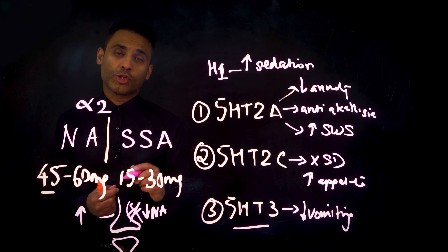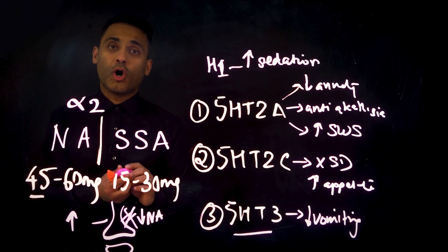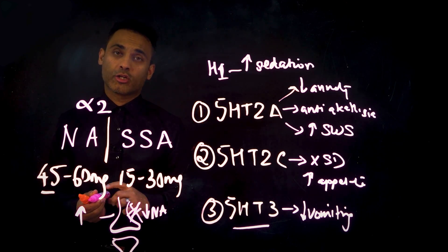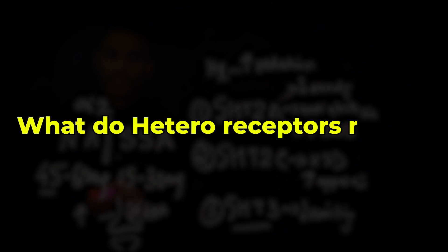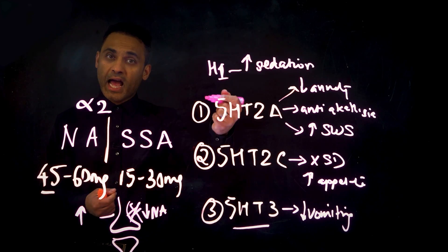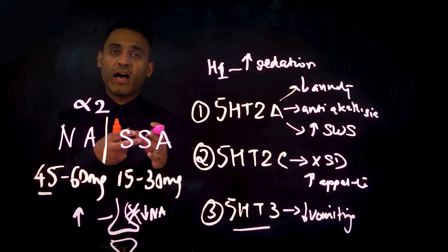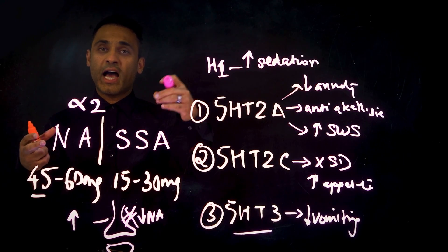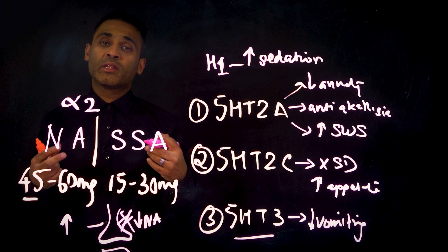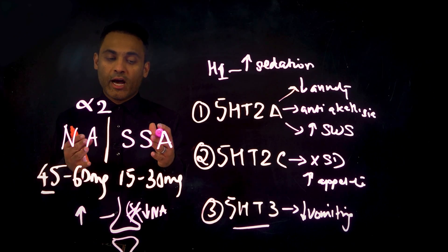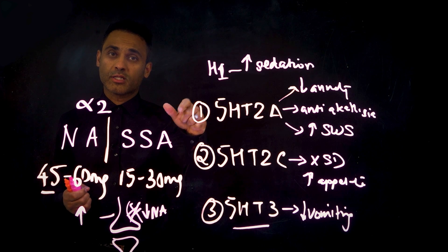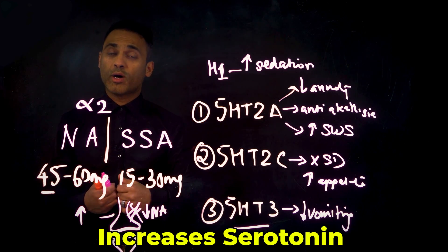Mirtazapine also has a property on the alpha-2 heteroreceptors on serotonergic neurons. Now what do heteroreceptors mean? So on serotonergic neurons, there are alpha-2 receptors. So whenever you have a neuron and you have a receptor related to a completely different neurotransmitter, that's called a heteroreceptor.